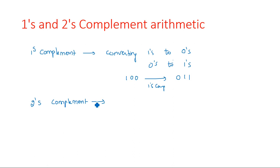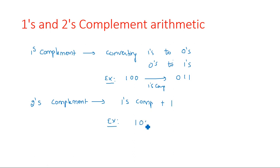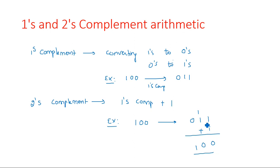Twos complement is nothing but first performing ones complement and then adding one — so twos complement equals ones complement plus one. For the same example, 1 0 0: first we do ones complement to get 0 1 1, then add one to get 1 0 0, so 1 0 0 plus 1 gives 1 0 1 as the twos complement value.